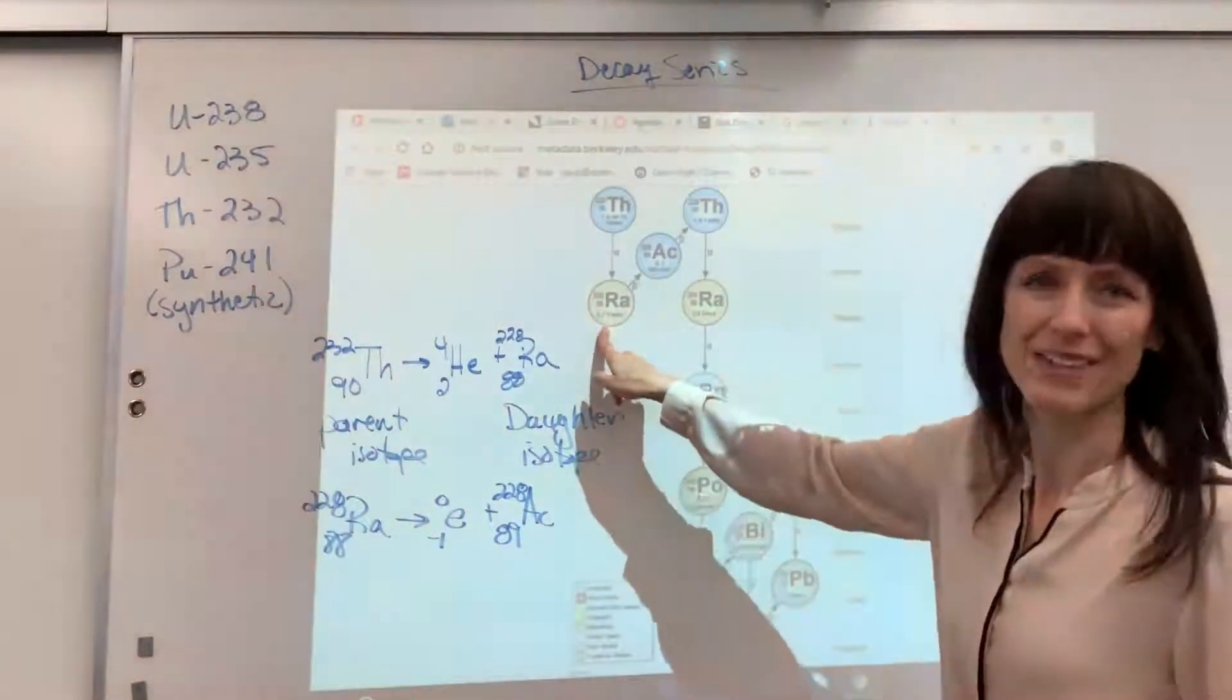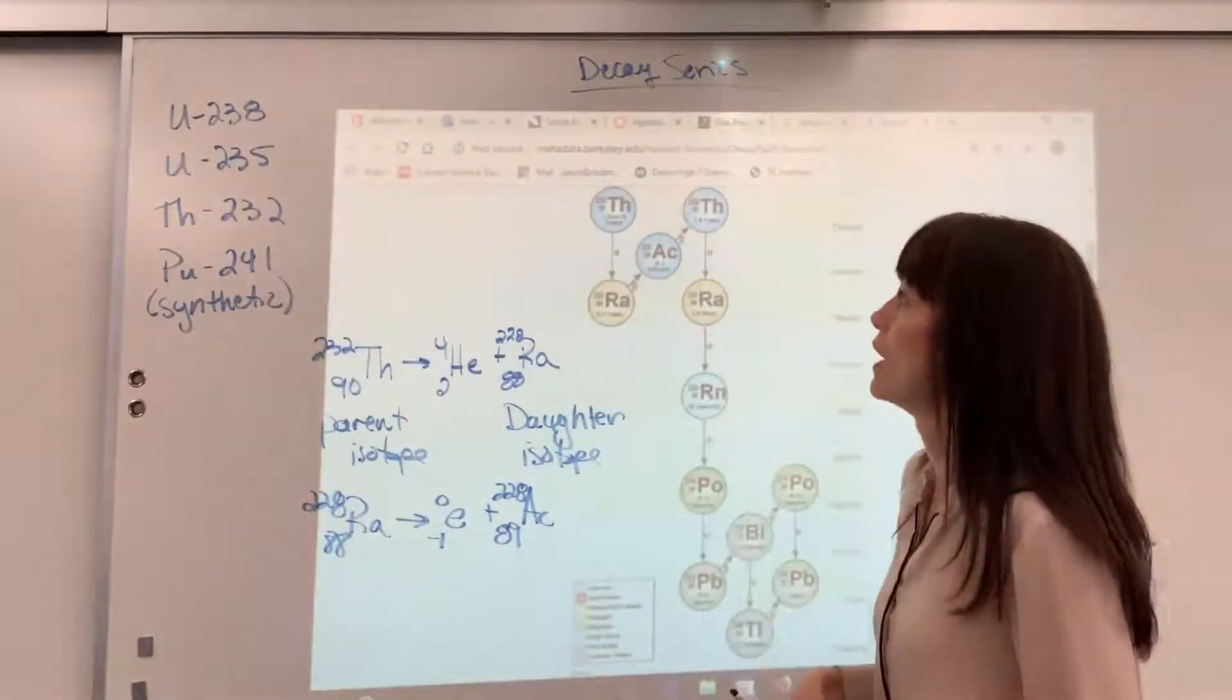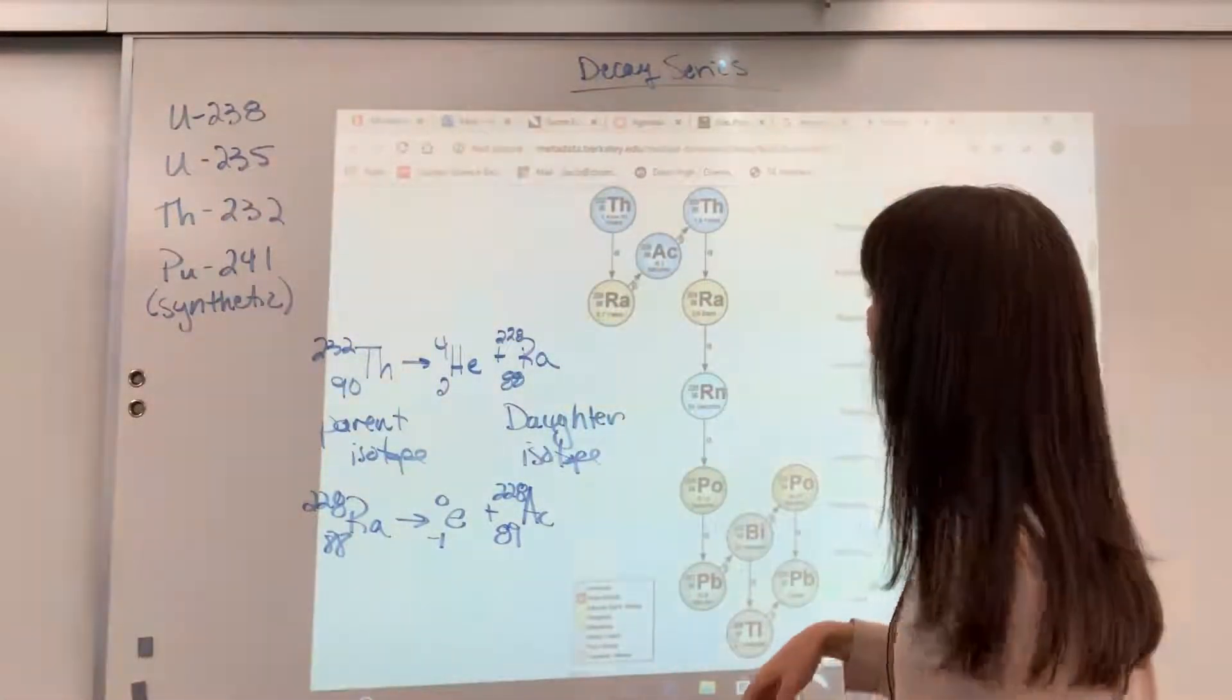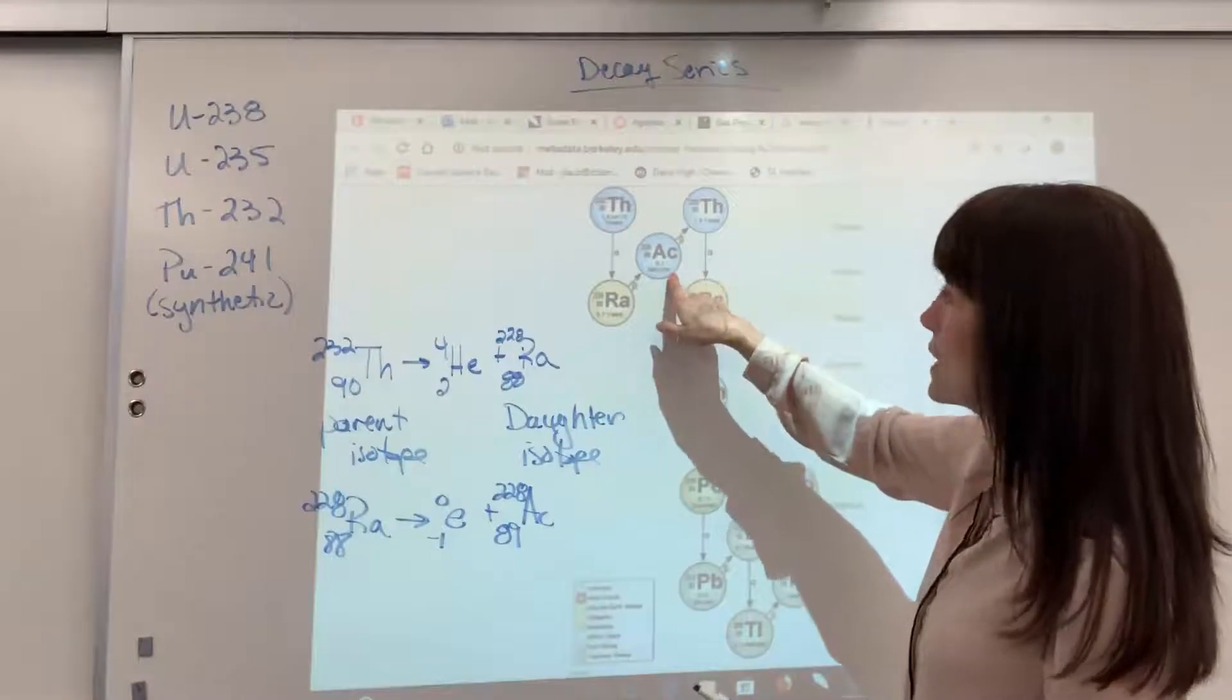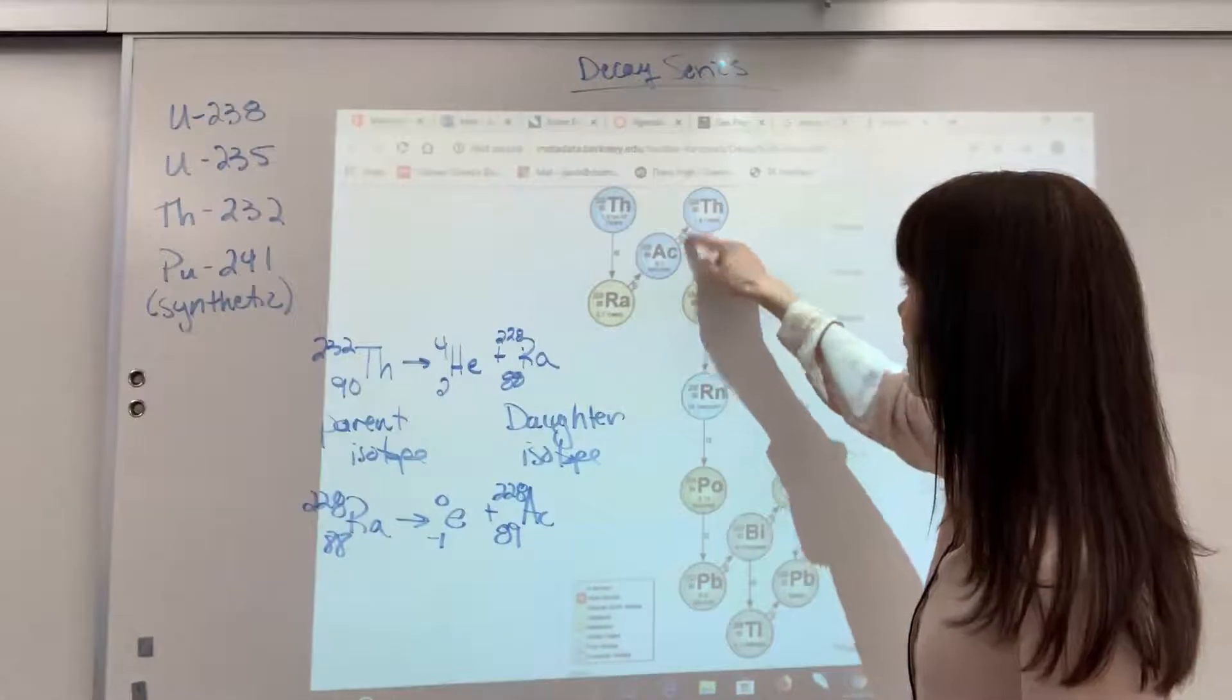This half-life is only 5.7 years. Whoa, that's not even a breath compared to 14 billion years. And then the actinium, kind of interesting, its half-life is only 6.1 minutes, and it undergoes another beta decay.